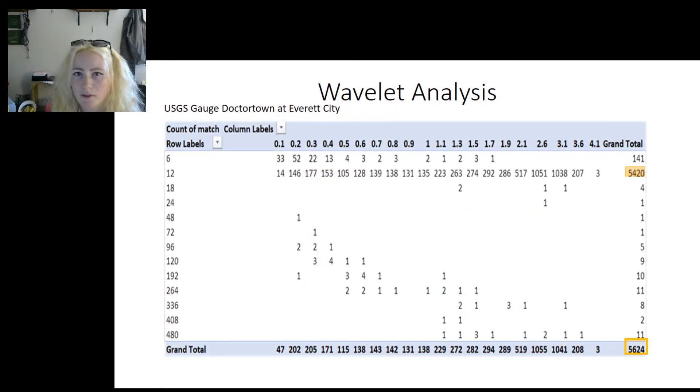Here are some results of Wavelet Analysis for USGS data at Everett City on the Altamaha. The left column of numbers represents hours, while the top row represents tidal range in feet. There are many matches at the period of 12 hours due to tidal period being around 12.42 hours. 5,420 matches out of 5,624 indicate strong tidal influence at this site.